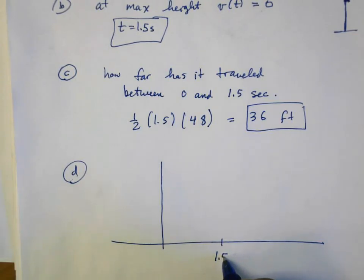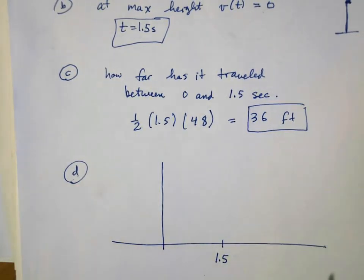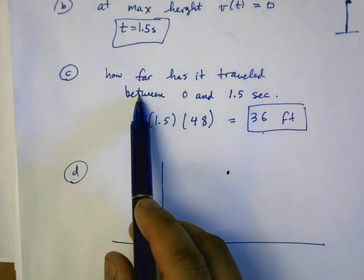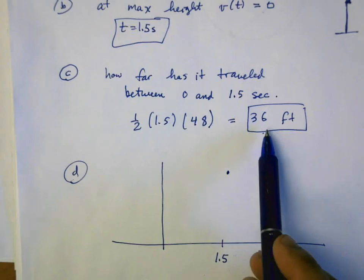This says a rock is thrown straight up from level ground. The velocity of the rock at any time t in seconds is v(t) equals 48 minus 32t.